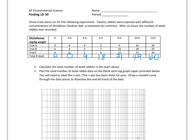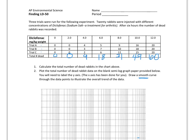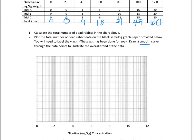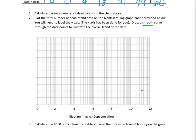Number two says to plot the total number of dead rabbit data on the blank semilog graph paper provided below. You need to label the y-axis — the x-axis has been done for you — and draw a smooth curve through the data points to illustrate the overall trend. So we need to label the y-axis. This paper mimics questions seen on the AP test, even on an FRQ. My y-axis is going to be 'the total number of dead rabbits.'